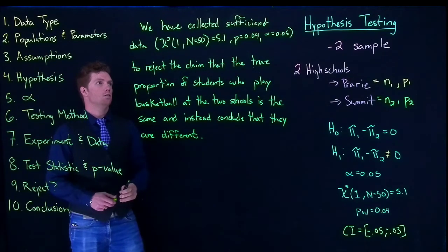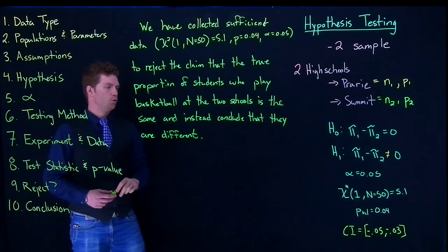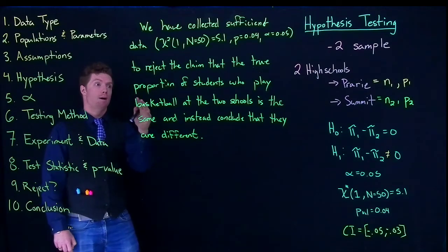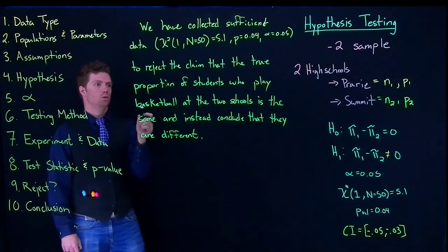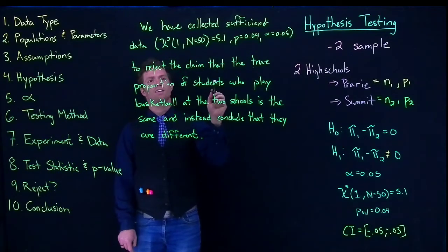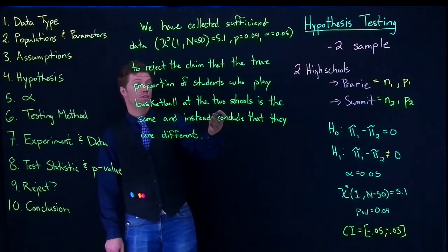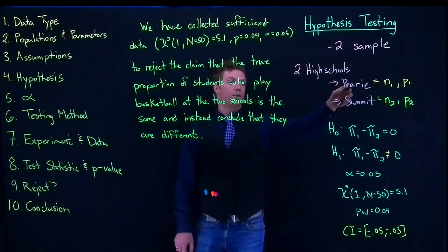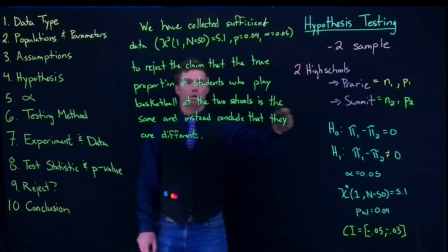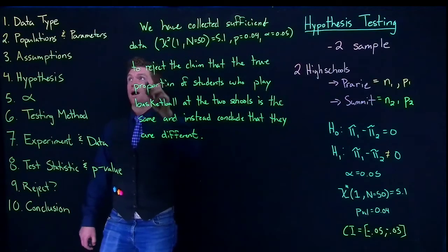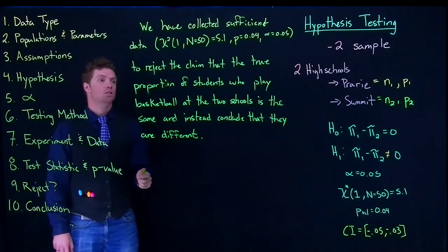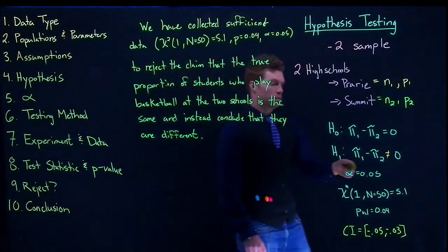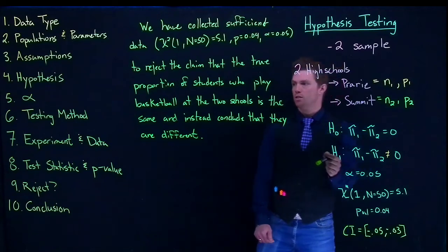Okay, so because our p-value is less than alpha, I was able to reject my null hypothesis. And I need to include in here my population, so it's the students at Prairie High School and Summit High School. And it's the true proportion of students who play basketball—that's my parameter. And I've been able to conclude that they were different because that is what my alternative hypothesis actually was.